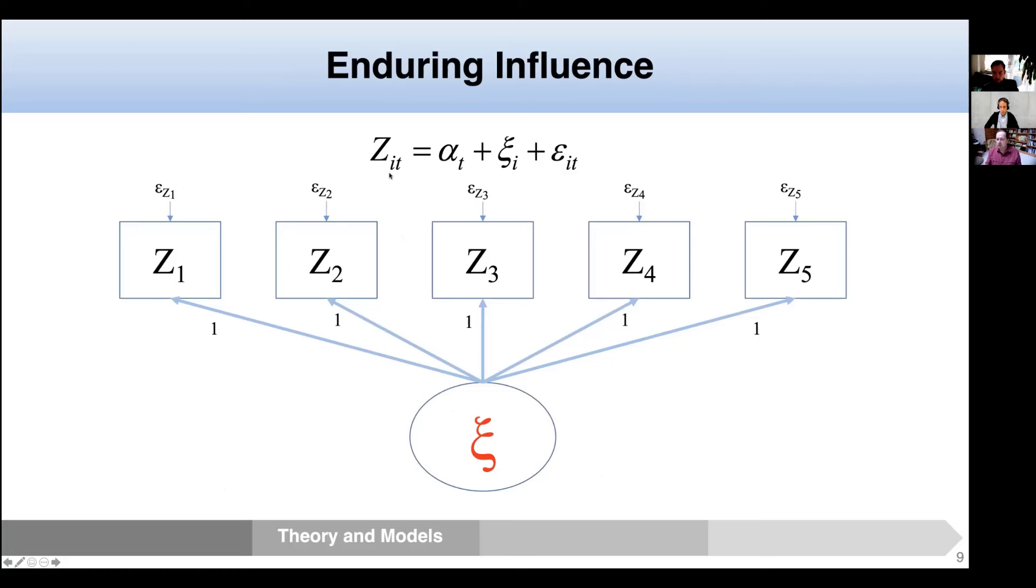This equation and path diagram are an attempt to represent that idea. The ZIT is the same as it was before. There's a time-varying intercept. This is the enduring influence, the stable aspect of that person's position on this outcome. And epsilon-IT are these departures from that. In this diagram, I'm assuming that the stable enduring effect has the same impact on people over time. The key idea is this constant time-invariant force that is driving responses across all of the waves of data.